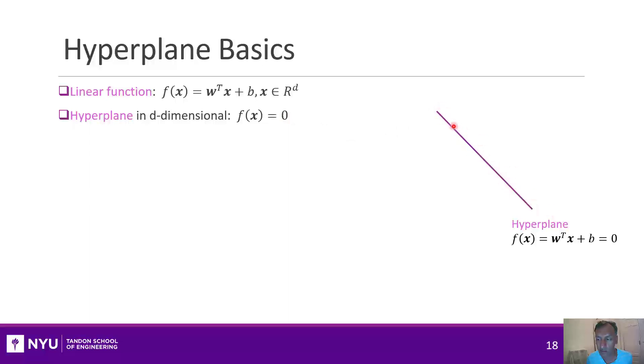Whenever you have a linear function, the set of points where that function is 0 defines what's called a hyperplane. So, if you're in two dimensions, the hyperplane would just be a line. And in three dimensions, the hyperplane would be a plane.